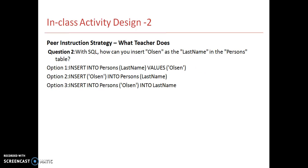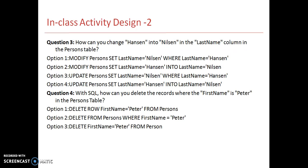Continuing with more questions: how do you change — update — Hansen to Nielsen in the last name column? The correct answer uses the UPDATE query: UPDATE persons SET last_name = 'Nielsen' WHERE last_name = 'Hansen'. The last question is: how do you delete a record where the first name is Peter? The answer is DELETE FROM persons WHERE first_name = 'Peter' — option two is correct. We are going to discuss these answers in class and make students more engaging through active learning.